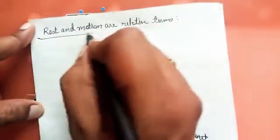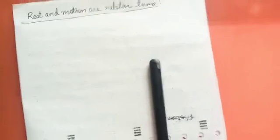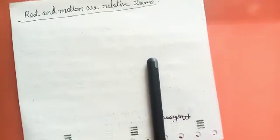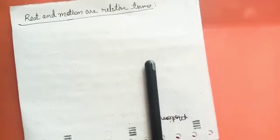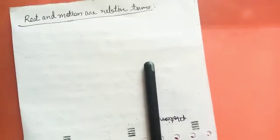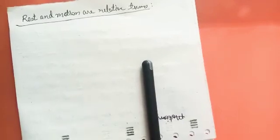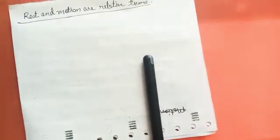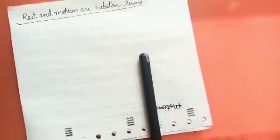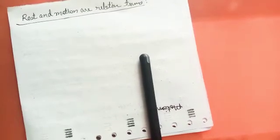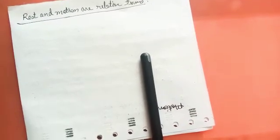Now in order to understand this, let me give you an example. A person is standing on the roadside and a passenger is sitting in the bus. Now for the passenger who is standing on the roadside, the passenger inside the bus appears to be moving if the bus is in motion.